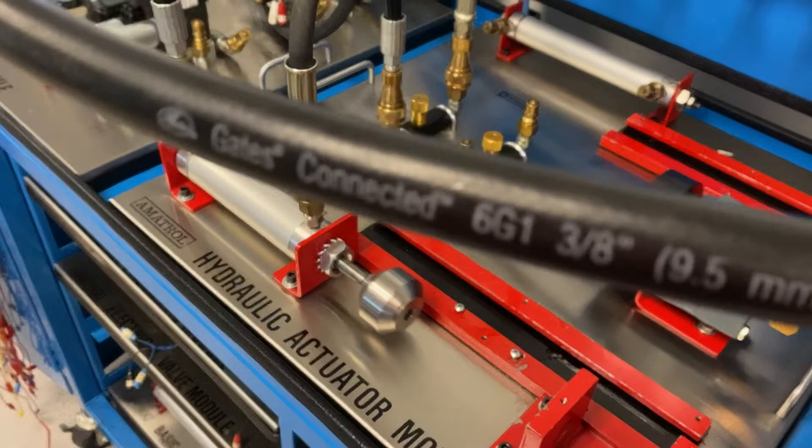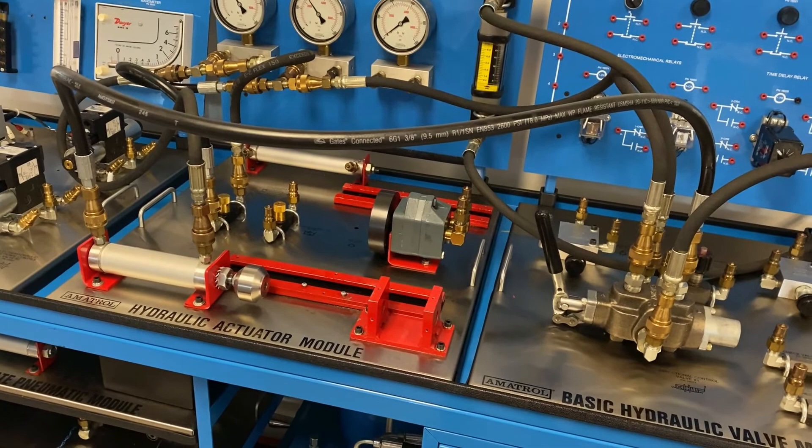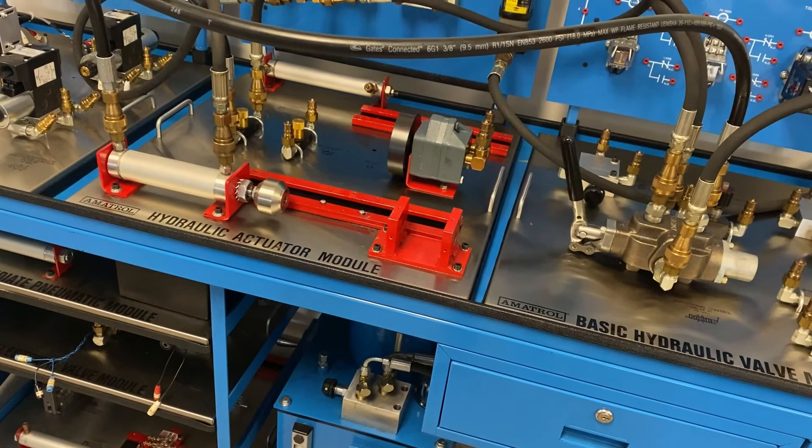So, again, the only difference between these two concepts is one is called meter-in. We're metering the fluid that goes into the cylinder. The second concept that I just showed you, we call that meter-out. In that case, we're only metering the outflow of the fluid. Okay guys, I think that finally does it for me on this video. Once again, thanks for watching.